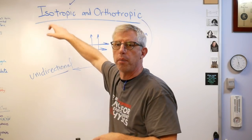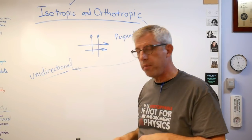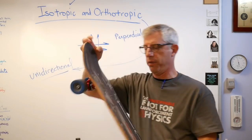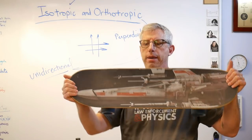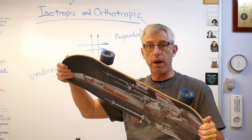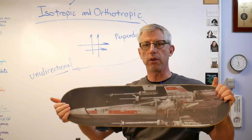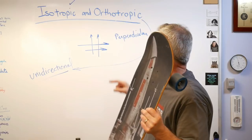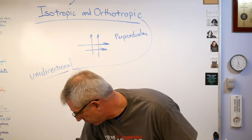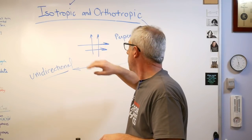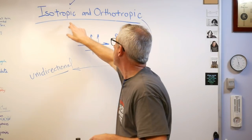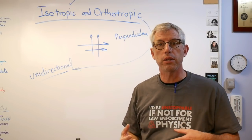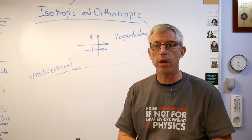Orthotropic means plies are typically 90 degrees apart. Here's my skateboard with an X-wing fighter on one side — it's made out of plywood, birch or maple, and the layers are 90 degrees to each other, so this plywood is orthotropic. Once you know to differentiate between isotropic and orthotropic, your ability to analyze structures is going to grow quite a lot. I hope this helps, and I'll see you next time.